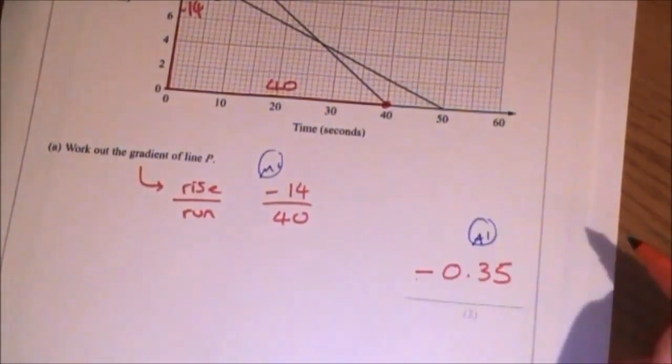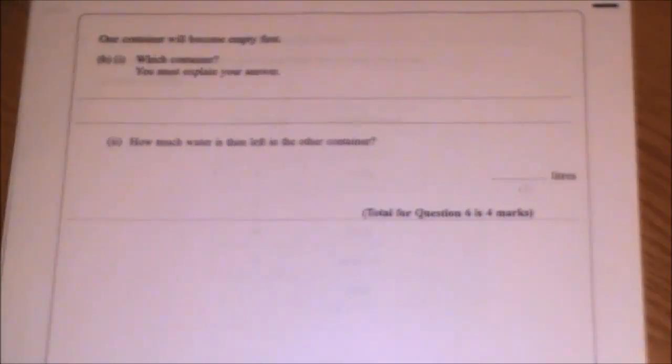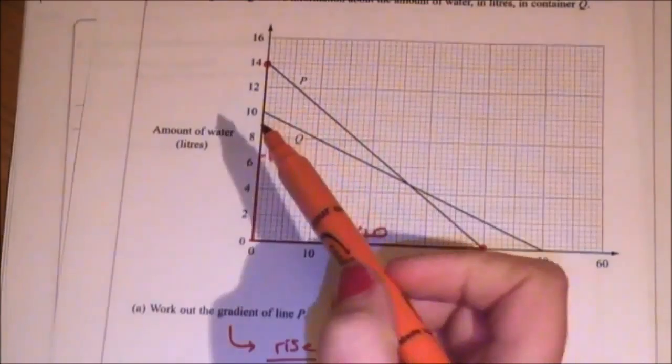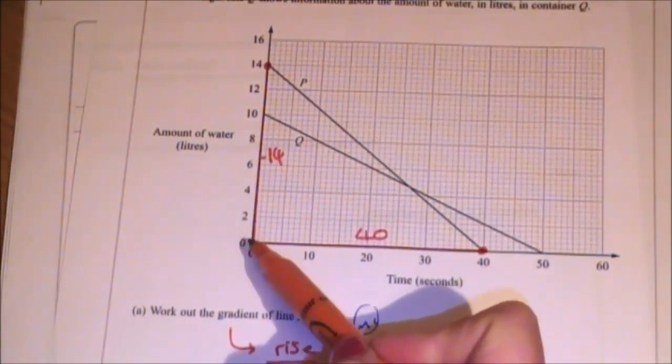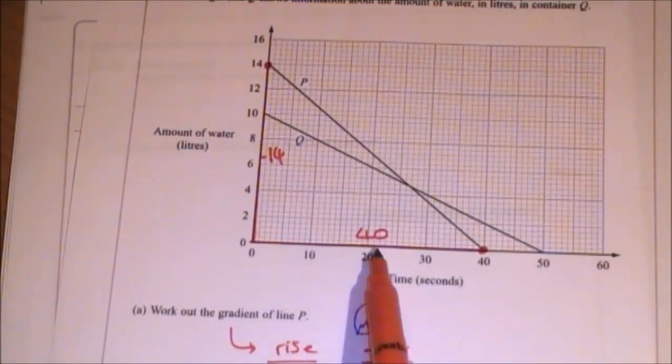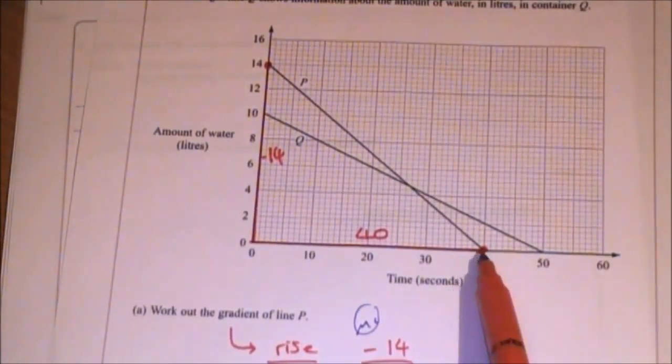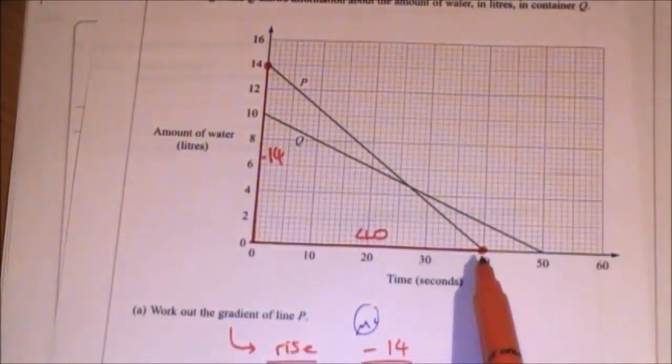Part B says, one container will become empty first. Which container? You must explain your answer. Let's look at the lines. We're looking at which container gets empty first. Empty means there's zero litres of water in the tank. This is the time it takes to get to zero. So this belongs to line P, so P will be empty first.